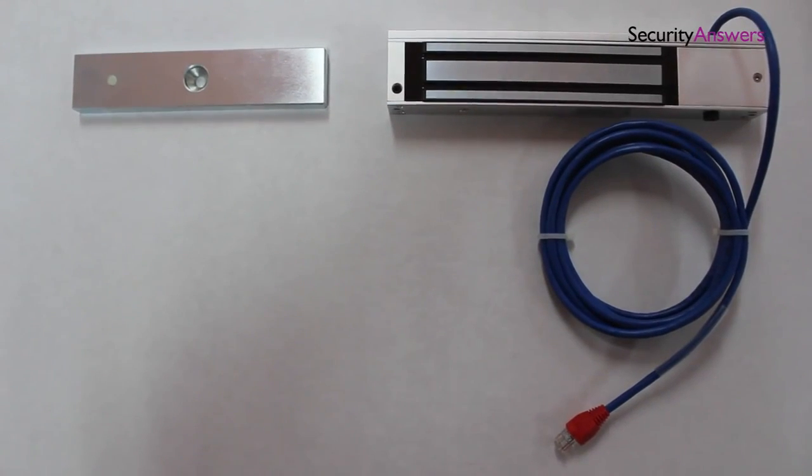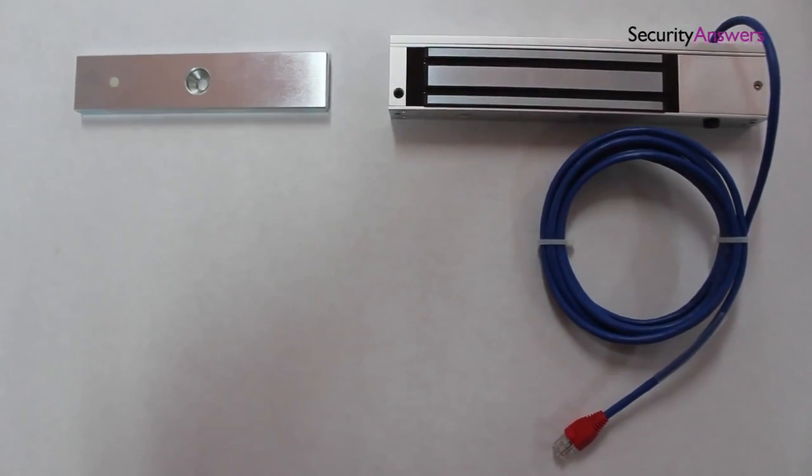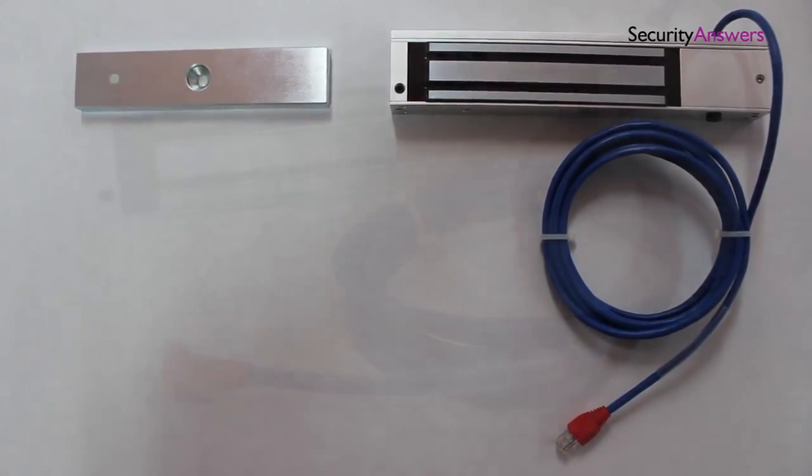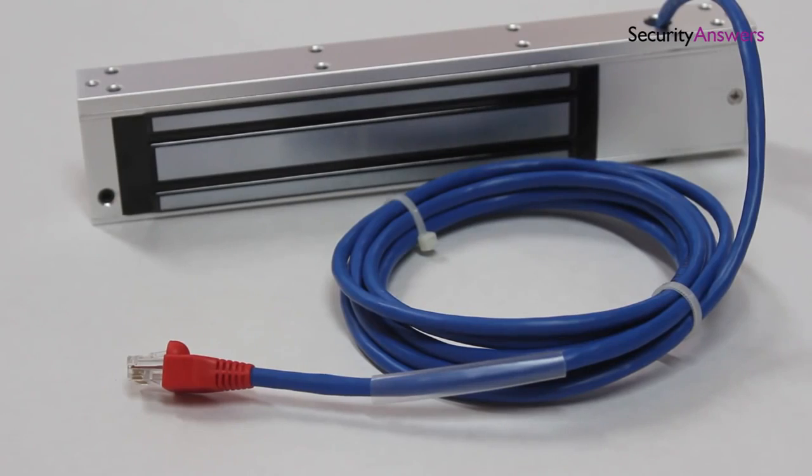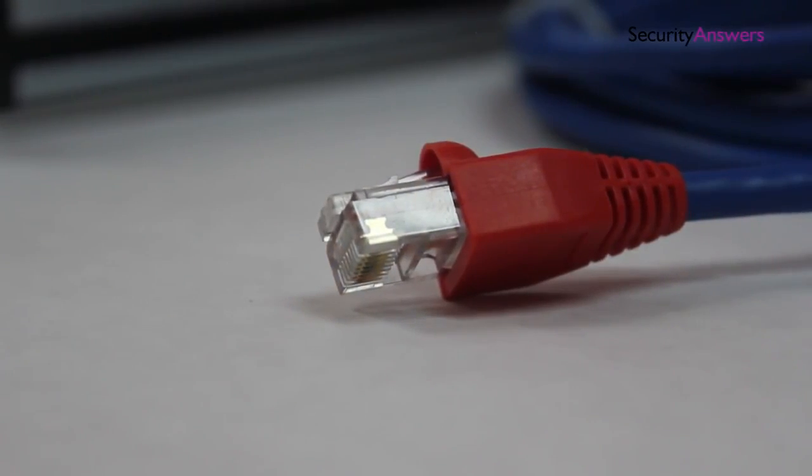The lock itself comes in two halves, a thin metal plate and a thick half. The thicker piece is the electromagnet itself, this is usually the part which is connected to the power supply which enables the mechanism to lock.